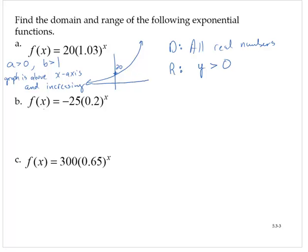Exercise B, f of x is equal to negative 25 times 0.2 to the x. So that tells me that the graph is below the x-axis and increasing.